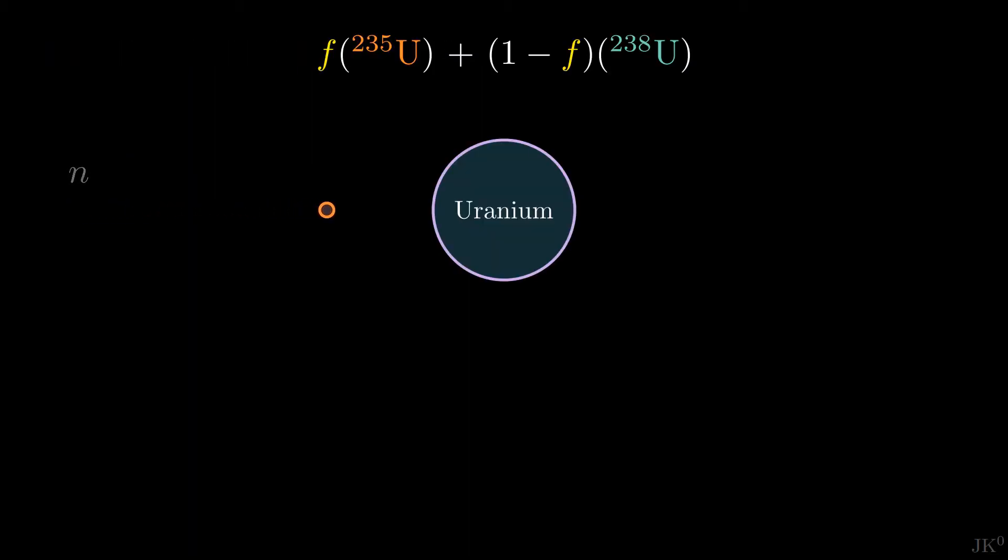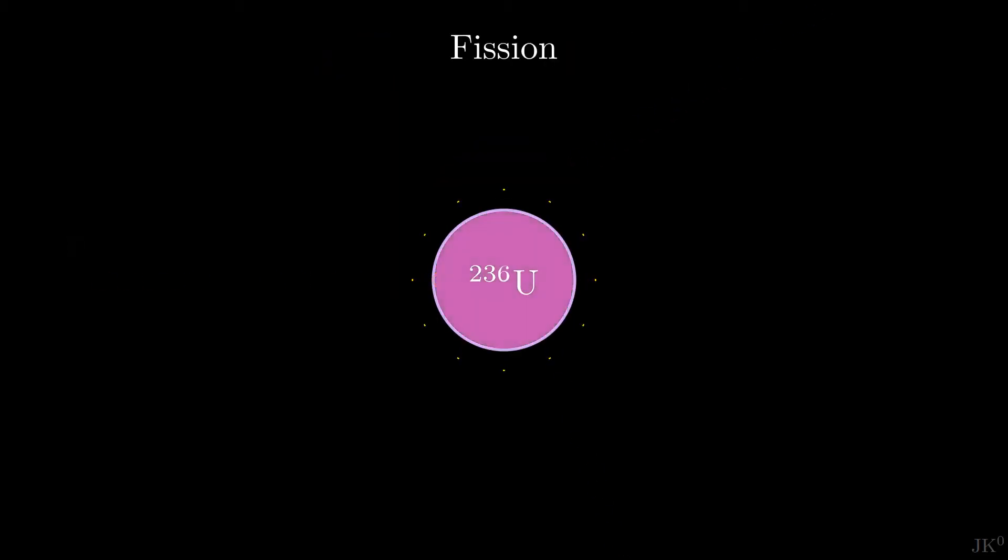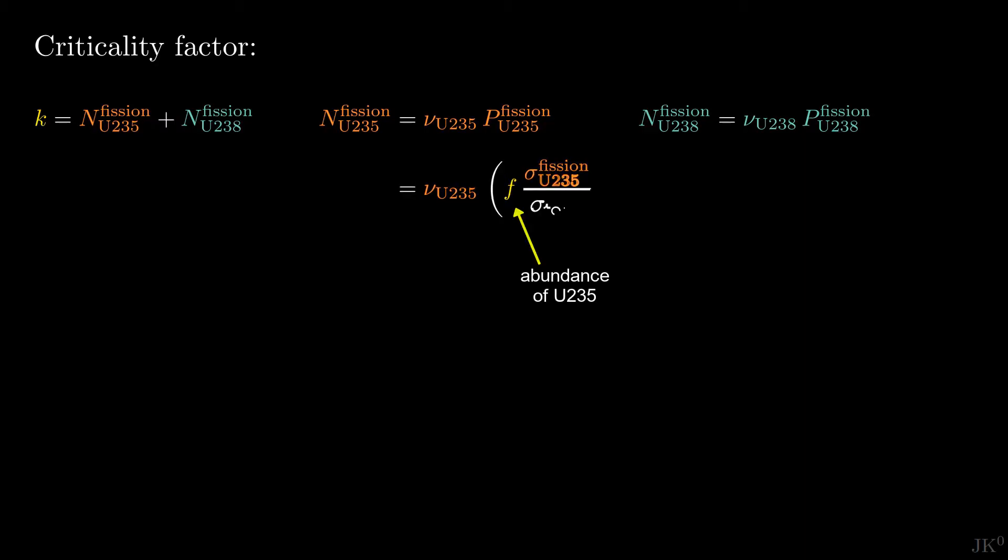Neutrons can hit a nucleus of U235 or a nucleus of U238 in the material. In each case, it can lead to fission and more neutrons, but they can also be captured and lost. These two reactions compete and we need to determine the average number of neutrons after the reaction, which is given by the sum of neutrons produced by the fission of U235 and U238. The number of neutrons produced by the fission of U235 is the average secondary neutrons per fission, that we call nu, times the probability of this fission. The same applies to U238. The probability of fission can be calculated as the relative abundance times the ratio between the fission cross-section and the total cross-section.